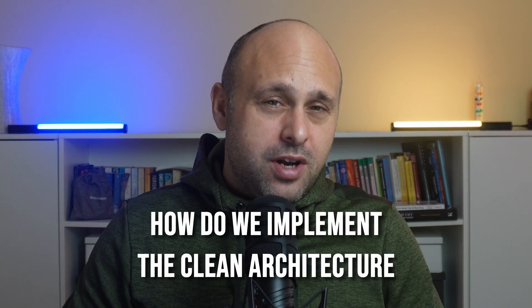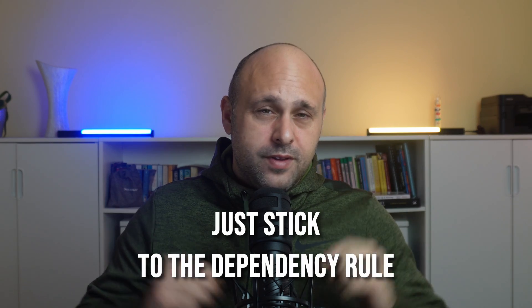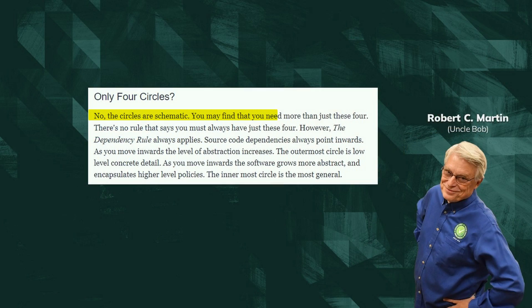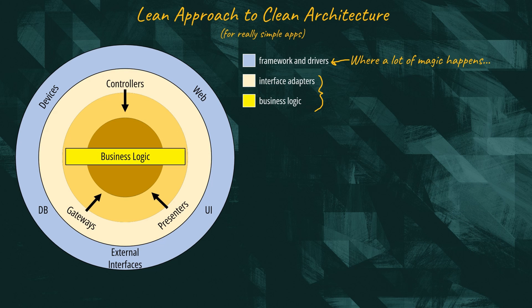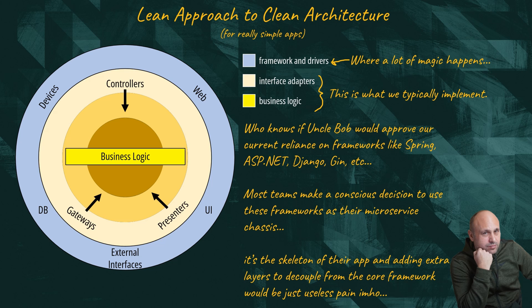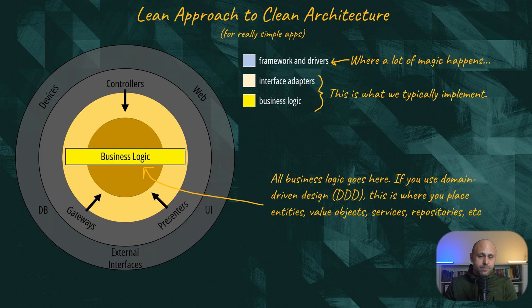So how do we implement the clean architecture in a real application? Just stick to the dependency rule. There is no need to replicate exactly the layers Martin defines — Uncle Bob says you can have more than four circles. You can get away with two or three layers most times, especially if you are developing a simple microservice. All business logic can be slotted inside the domain layer. If you use domain-driven design, you can have all the elements of Tactical DDD in there.